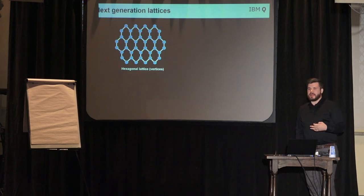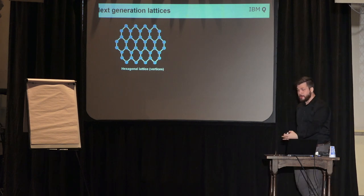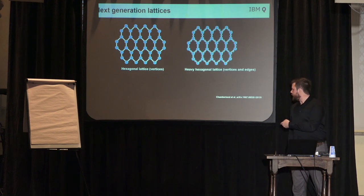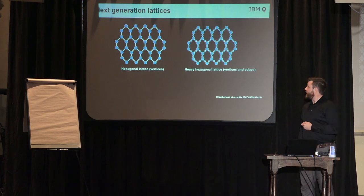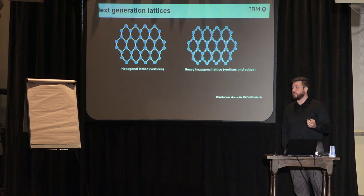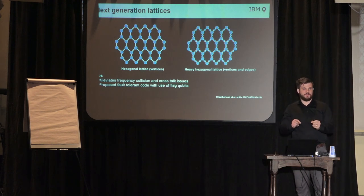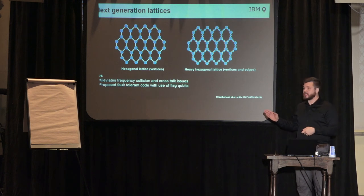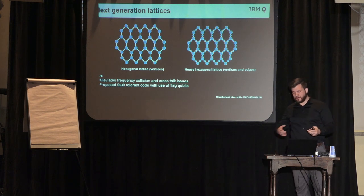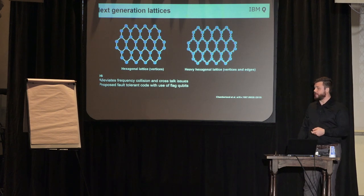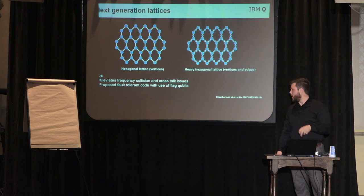Up until recently we were using this hexagonal lattice. When you're trying to think about how to actually start scaling these things up into larger and larger systems, one issue — particularly when using the fixed frequency realization that IBM has — is that you're going to have a lot of frequency collisions. So recently Andrew Cross and others at IBM published this heavy hexagonal lattice, where we put qubits in the center. This helps alleviate frequency collisions so you can actually start to scale these things up, and your fabrication sensitivities are a little bit easier to meet. It also helps with crosstalk issues. What also comes in this paper is a proposed fault-tolerant code, which is an interesting mix of the Bacon-Shor code and surface code.